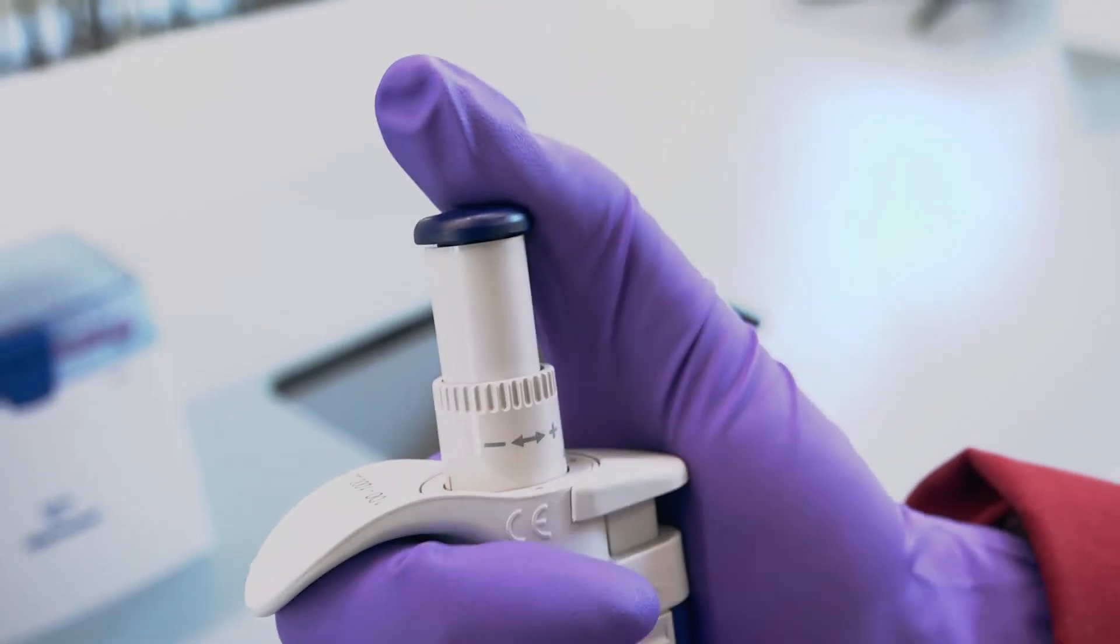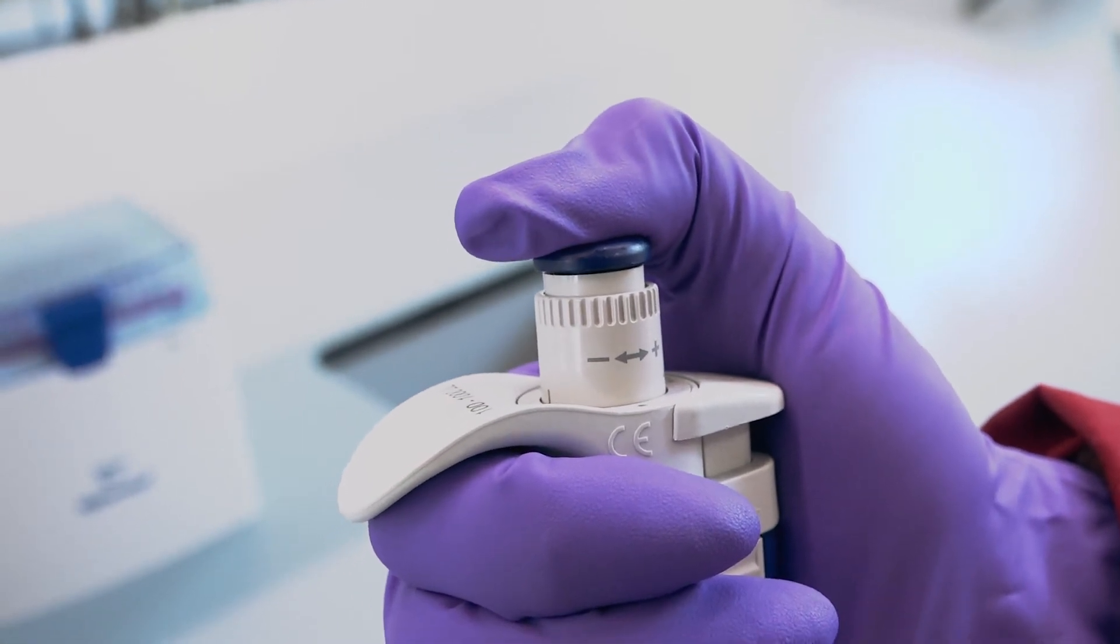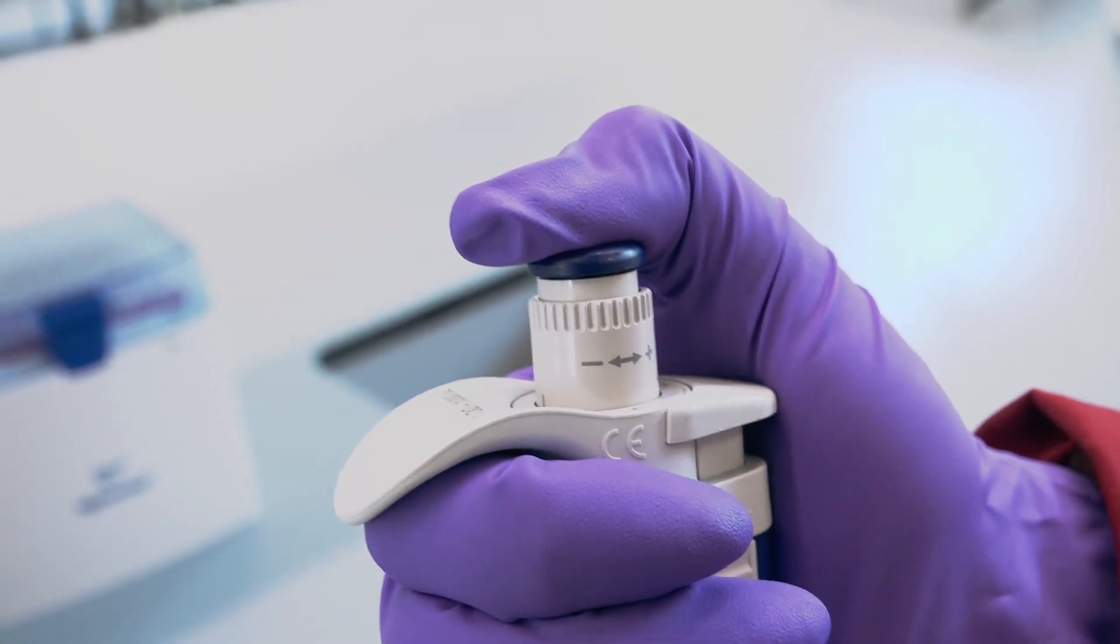Holding the pipette so your thumb can comfortably reach the plunger, carefully lower the plunger until you feel resistance. This is the first stop and is determined by the volume you set and will vary with volume even when using the same pipette.